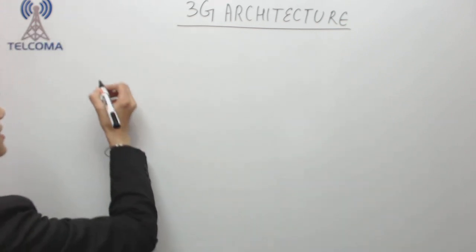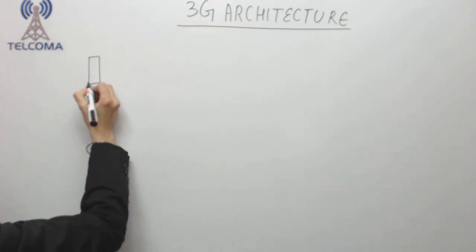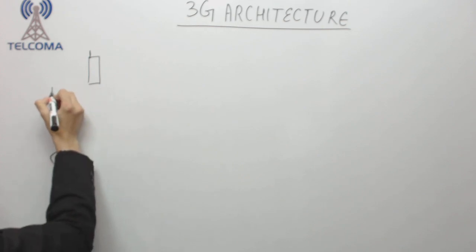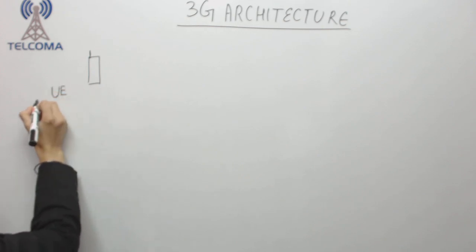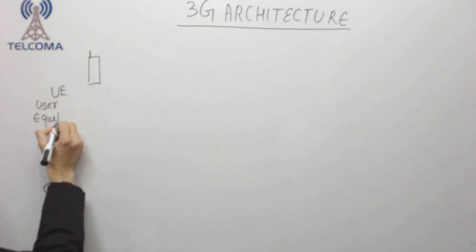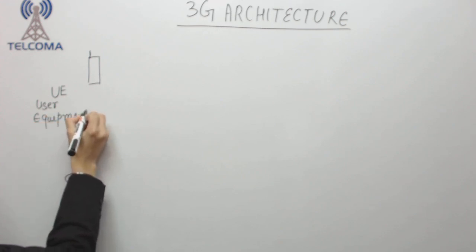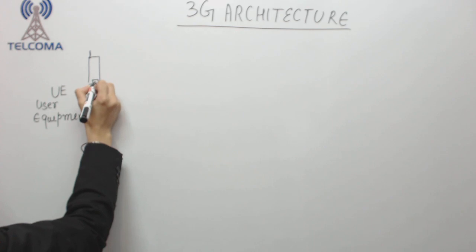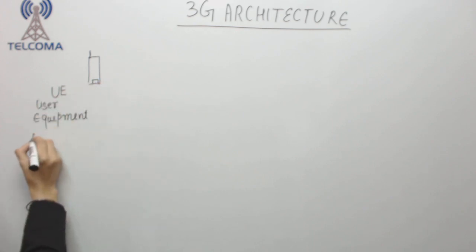Hello, today we are going to discuss 3G architecture. The architecture starts with the very first unit which is the UE. This UE is user equipment. This user equipment has a 3G supported SIM which is called USIM.